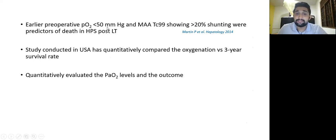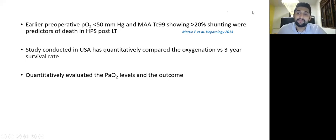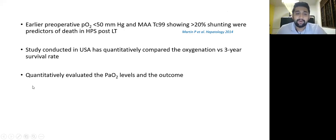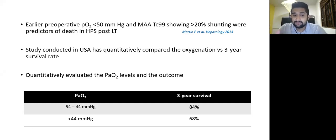Pre-operative arterial PaO2 less than 50 mmHg and Tc-99 MAA scan showing more than 20% shunting were found to be predictors of death following transplantation. A US study quantitatively compared pre-operative oxygenation with three-year post-transplant survival, showing good survival when PaO2 was between 44 and 54 mmHg. However, when pre-transplant PaO2 was less than 44 mmHg, there was a significant reduction in three-year survival.